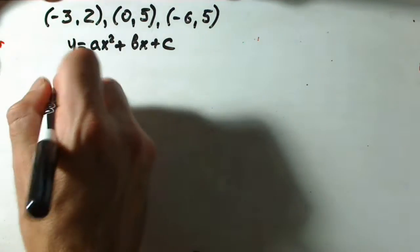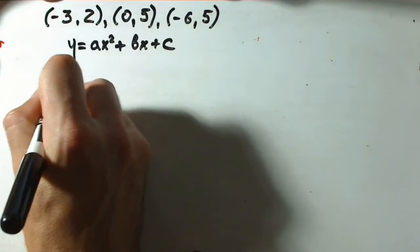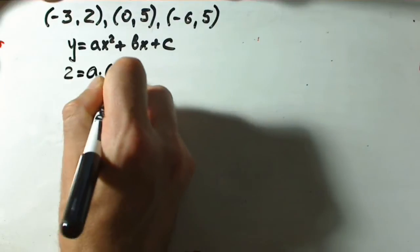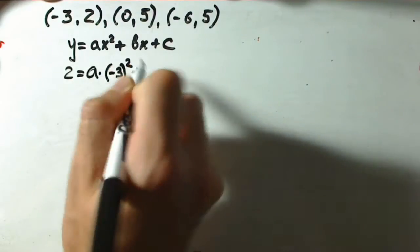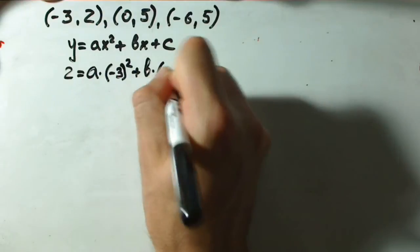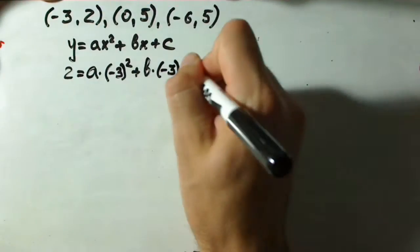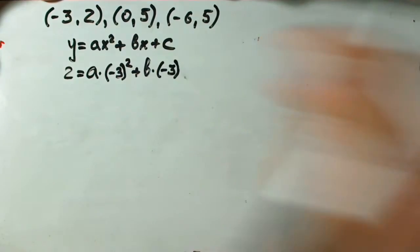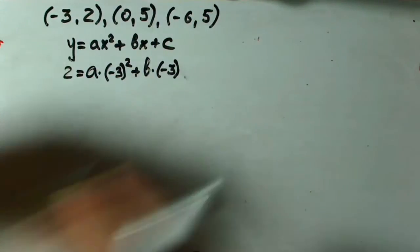First one, negative 3, 2. We are just plugging y equals 2, a times x which is negative 3 squared plus b times x, that means negative 3, and plus c.